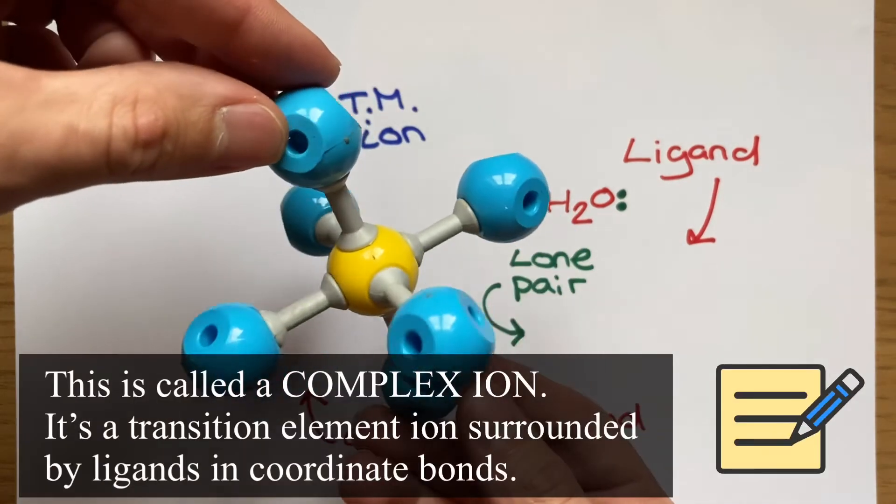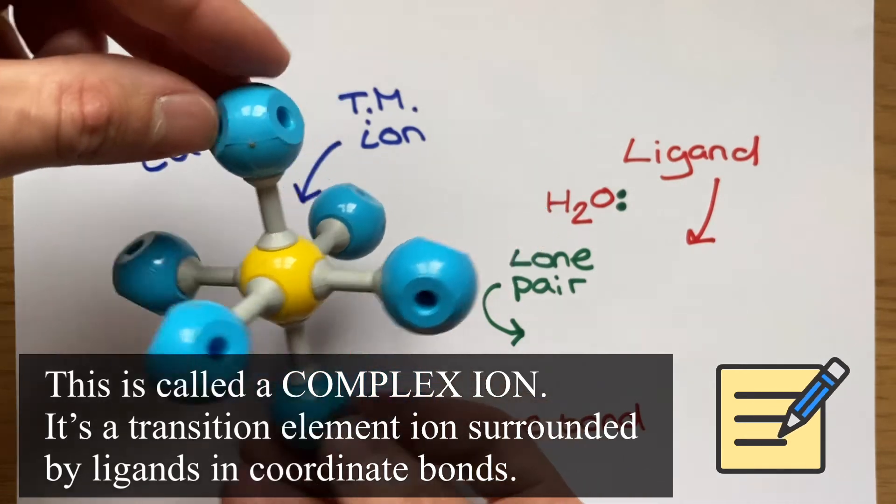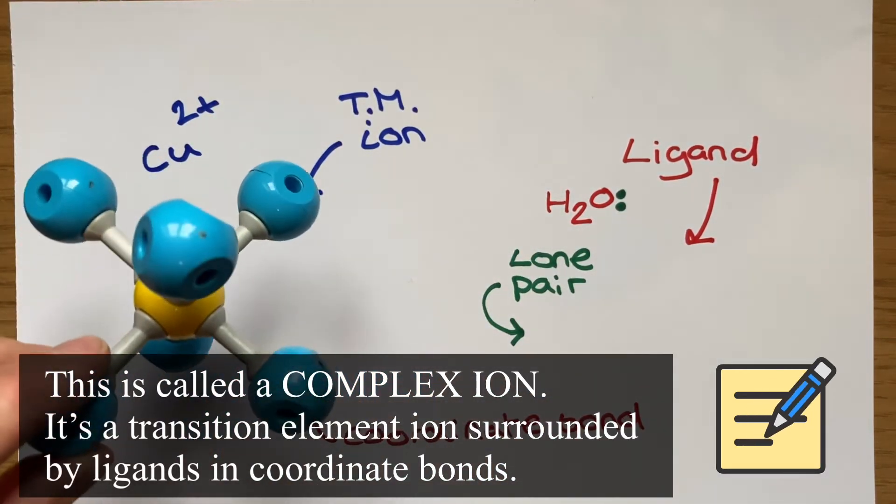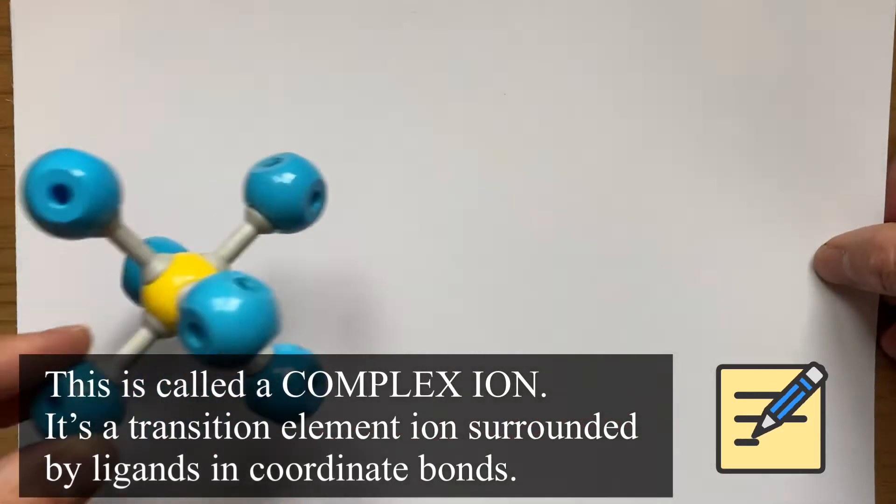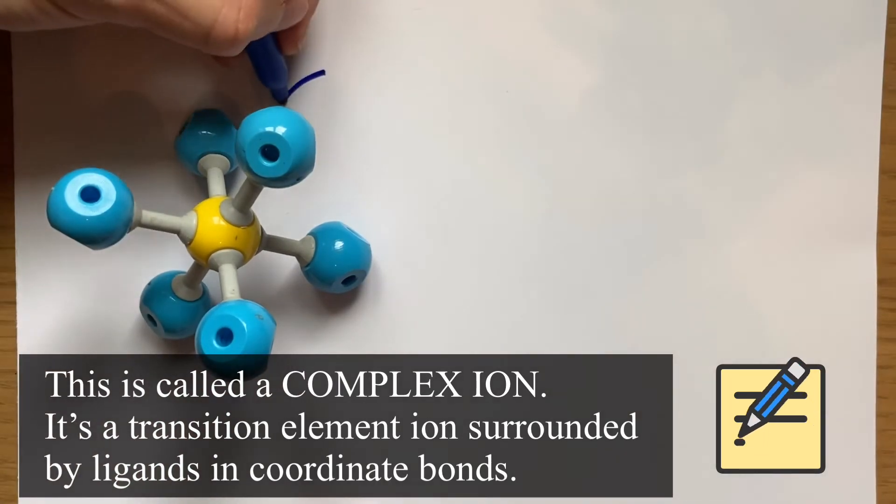Once the required number of ligands have made their coordinate bonds to the transition metal ion, we produce this, which is a complex ion. It's a transition element ion surrounded by the ligands in coordinate bonds. It doesn't mean complex as in complicated, it means complex as in large structure.